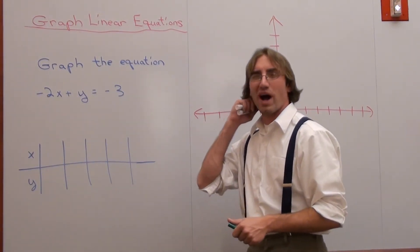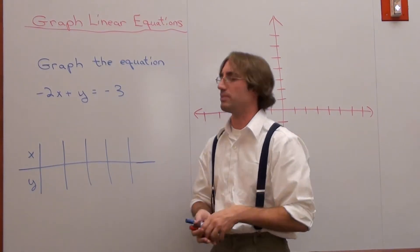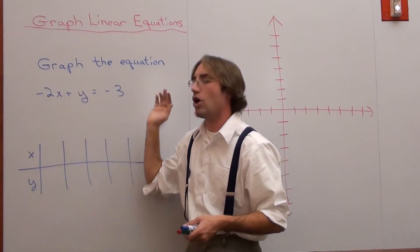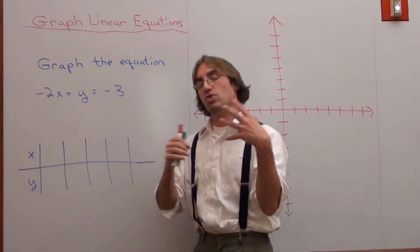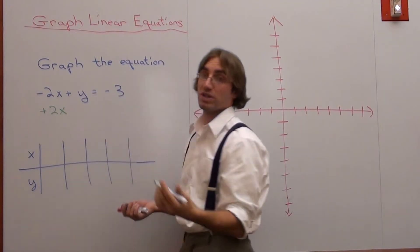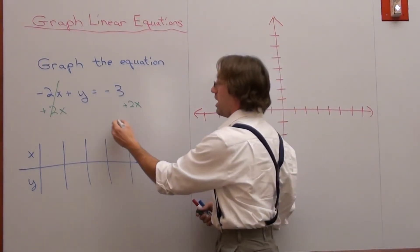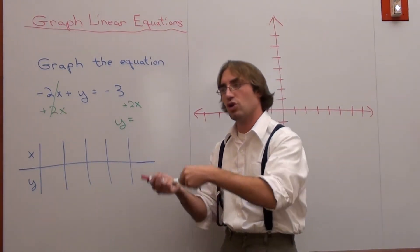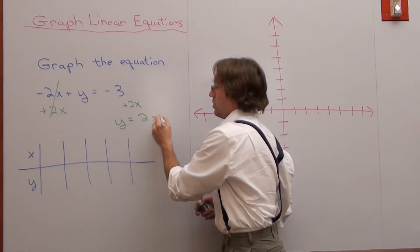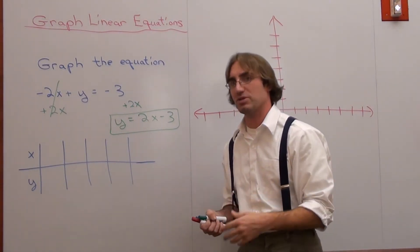I want to get y by itself, and in order to do that I have to move everything that does not have a y to the other side of the equation. This negative 2x — that's not fine. I need to move this negative 2x away from the left side to the right side. Remember, what you do on one side of an equation, you have to do on the other. So I'm going to add 2x to both sides. Negative 2x plus 2x cancels to zero, and I'm left with y equals 2x minus 3. Congratulations, you just got y by itself.